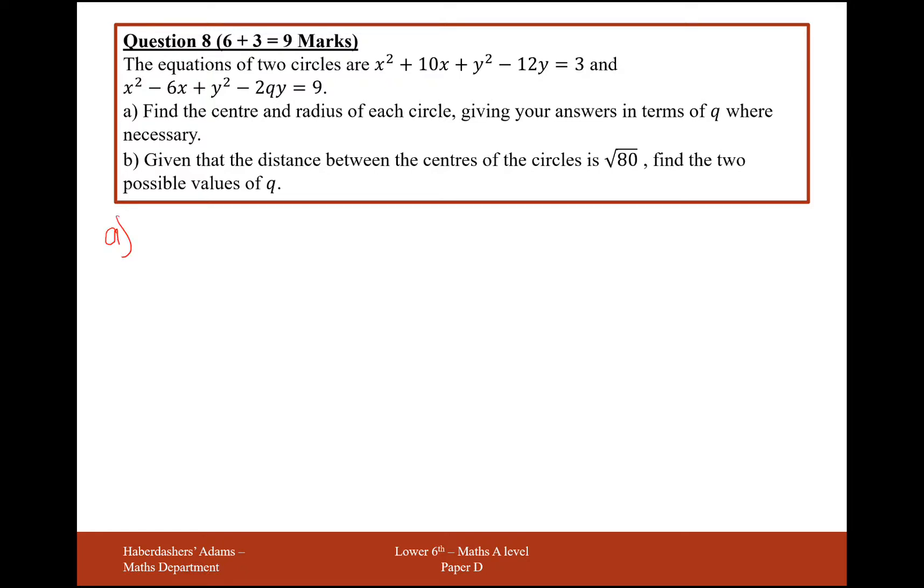What we need to do to find the centers and radiuses of these circles is to complete the square on the x variables and the y variables for each of the circles. So we set up a bracket with a squared component to it, and you need an x in there, and you add half of your 10, which is 5. And then to balance that out, you need to take away 25. Then you do the same for the y variables, so this time it's going to be y minus 6 squared, and then you take away 36. And this will equal 3.